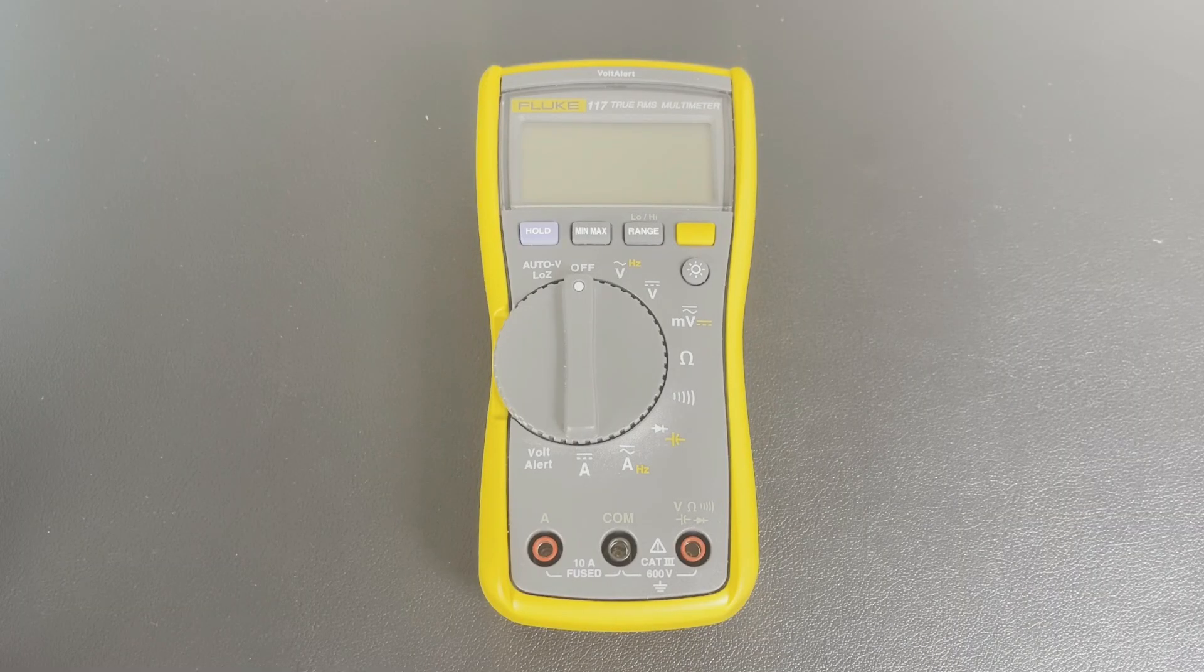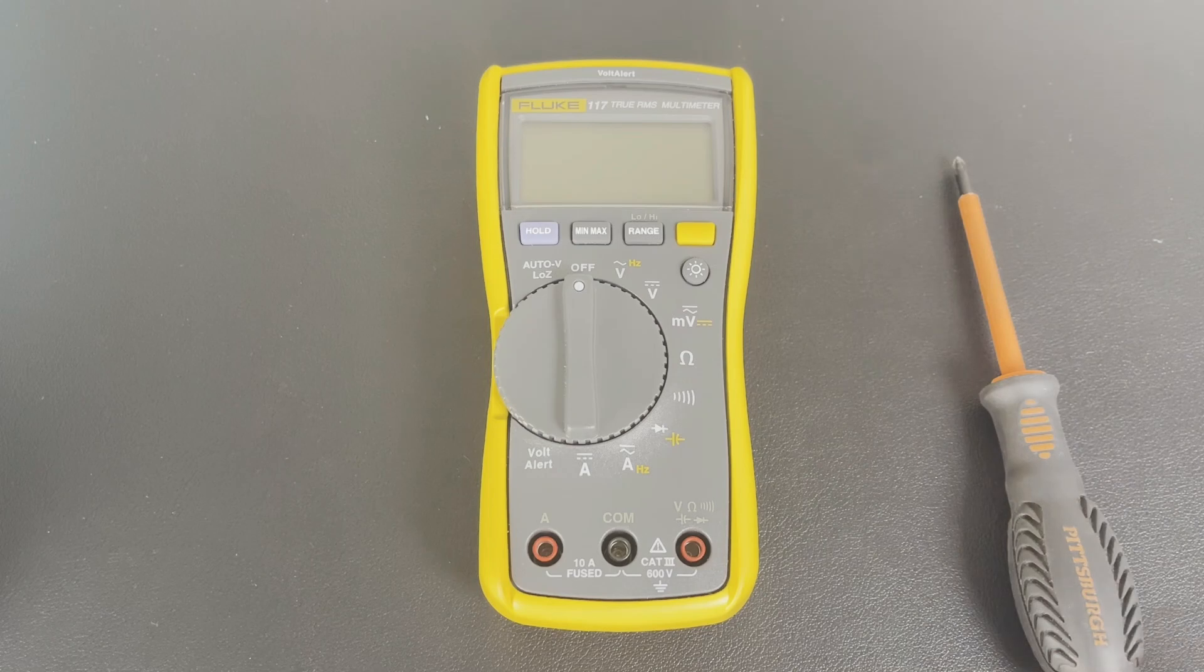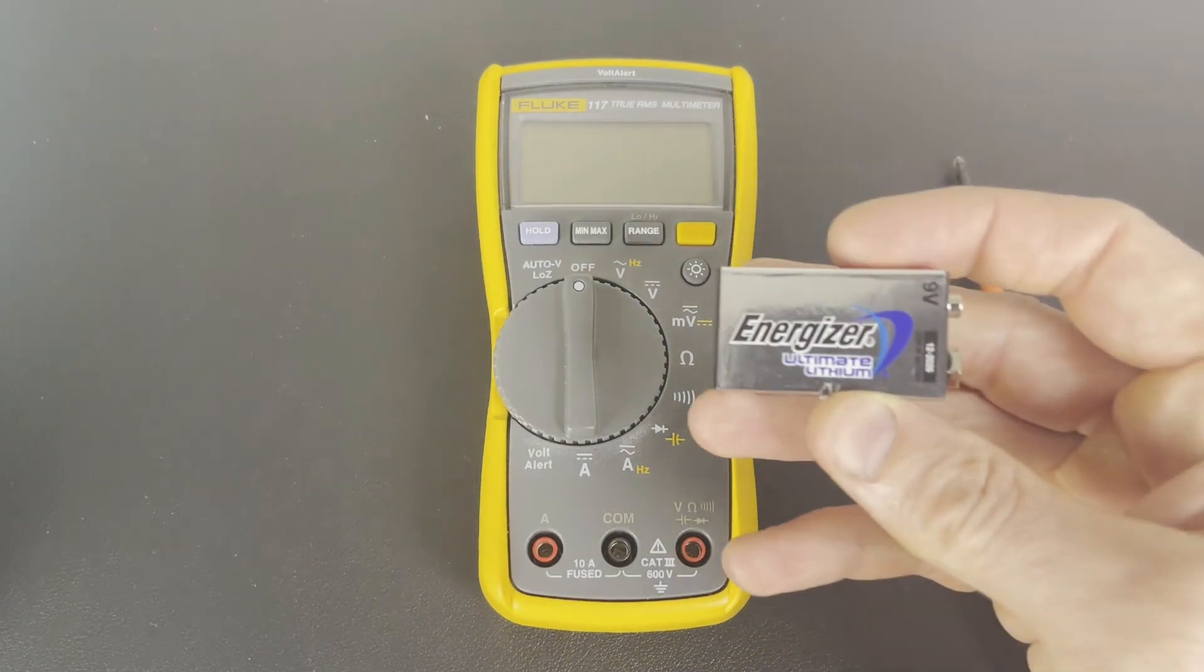Here's how to change the battery on a Fluke 117 True RMS Multimeter. All you need to do this is a Phillips head screwdriver and a 9-volt battery.